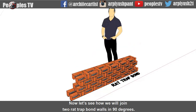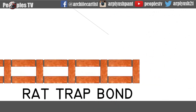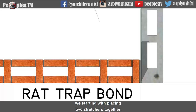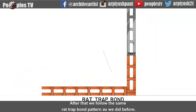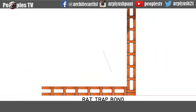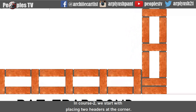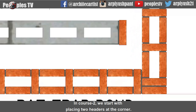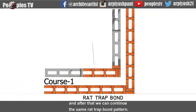Now let's see how we will join two rat trap bond walls at 90 degrees. At the junction, we start by placing two stretchers together, then follow the same rat trap bond pattern as before — this creates course 1. In course 2, we start by placing two headers at the corner, and after that we continue the same rat trap bond pattern.